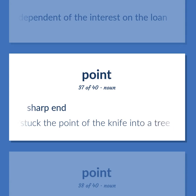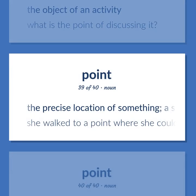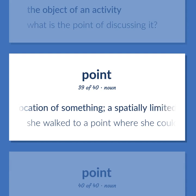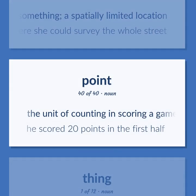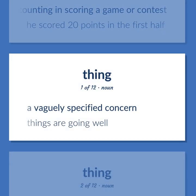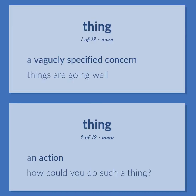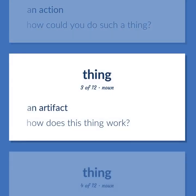The object of an activity — what is the point of discussing it? The precise location of something, a spatially limited location. She walked to a point where she could survey the whole street. The unit of counting in scoring a game or contest — he scored 20 points in the first half. Thing: a vaguely specified concern — things are going well. An action — how could you do such a thing? An artifact — how does this thing work?